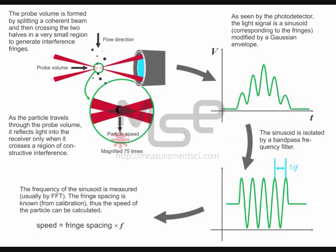Here is a brief overview of how the LDV works. This illustration shows the MiniLDV probe with the two split beams converging. The crossing region is called the probe volume. Because the two arms come from the same beam when they cross, an interference pattern is generated. These stripes are called fringes. The fringe spacing distance is fixed.